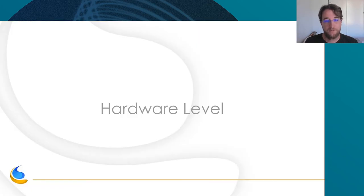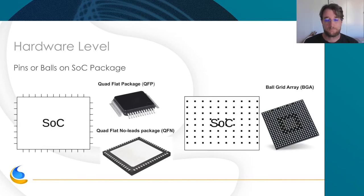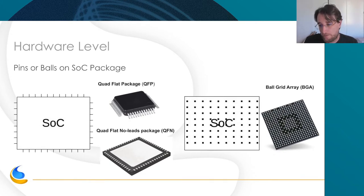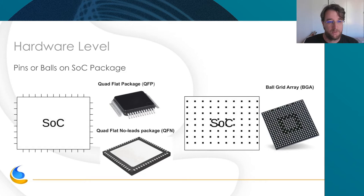We're going to start at the hardware level to see what a pin, pad, or GPIO is from a hardware point of view. When you have your chip or SoC, you can have multiple package types. One common one is the QFP or equivalent QFN, which has all the pins or pads on the sides. The other type is BGA, where the pads or pins are balls underneath the package. BGA is much more complex to solder — the QFN can be done by hand — but you won't find a high-profile SoC in a QFP package.